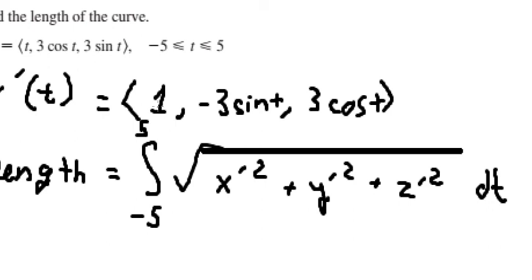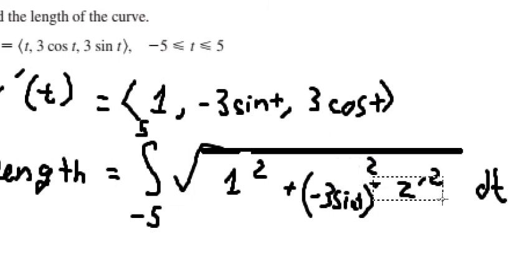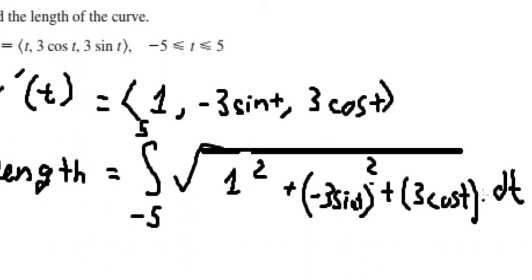So this one we got number one. This one we got negative three sine t. And the last one, this one is three cosine t, squared.